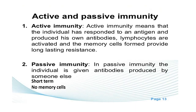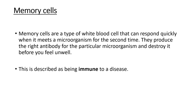Active and passive immunity have key differences. In active immunity, the individual responds to an antigen and produces its own antibodies — lymphocytes are activated, memory cells are formed and multiply, giving long-lasting, long-term resistance. In passive immunity, the individual is simply given antibodies produced by someone else; it is short-term and no memory cells are produced. Memory cells are a type of white blood cell that respond extremely quickly when meeting a microorganism for a second time, producing the right antibody to destroy it before you feel unwell — this is what it means to be immune to a disease.